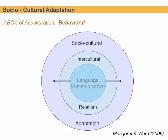Moving into the behavioral section of the ABCs of acculturation — we've looked at the Affective, and now the Behavioral and socio-cultural adaptation. This is a nice graphic by Mascord and Ward looking at our behavioral relationships — intercultural language communication and how that affects our adaptation into the socio-cultural realm. All these areas have some really good predictors and good influences on helping us to assimilate and adapt behaviorally.